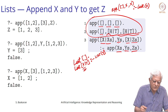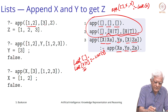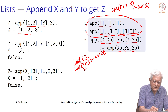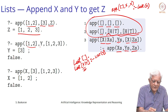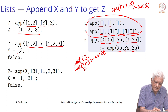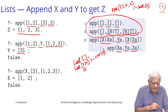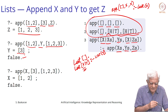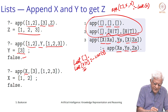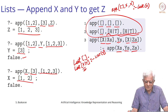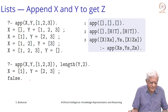If you ask the query: take [1,2] and append it to [3], what is z? It says z will be [1,2,3]. You can ask: if I take [1,2] and append it to something, will I get [1,2,3]? It will say yes, that something must be [3]. Wherever there are variables, it will look for other answers. So x can be the first argument and it comes back saying x equals [1,2]. By now I think we are familiar with the way Prolog works.